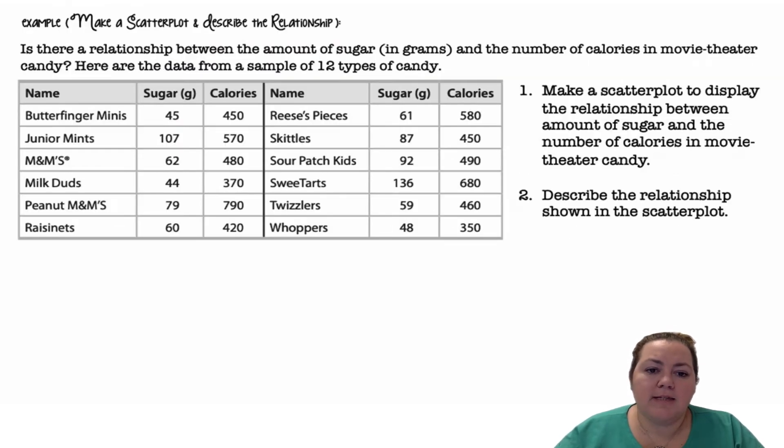Make a scatter plot and describe the relationship. Is there a relationship between the amount of sugar in grams and the number of calories in movie theater candy? Here are the data from a sample of 12 types of candy. We're going to make a scatter plot to display the relationship between the amount of sugar and the number of calories in movie theater candy, and then describe the relationship shown.